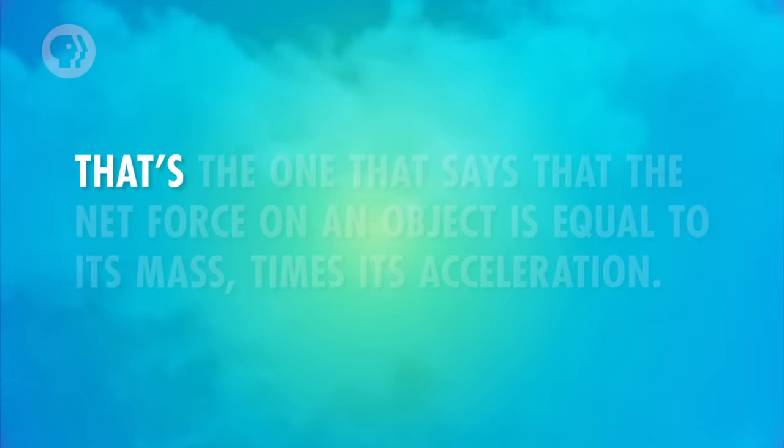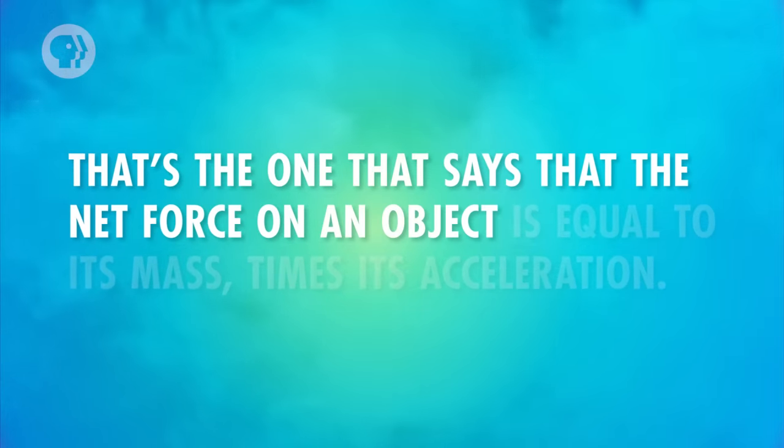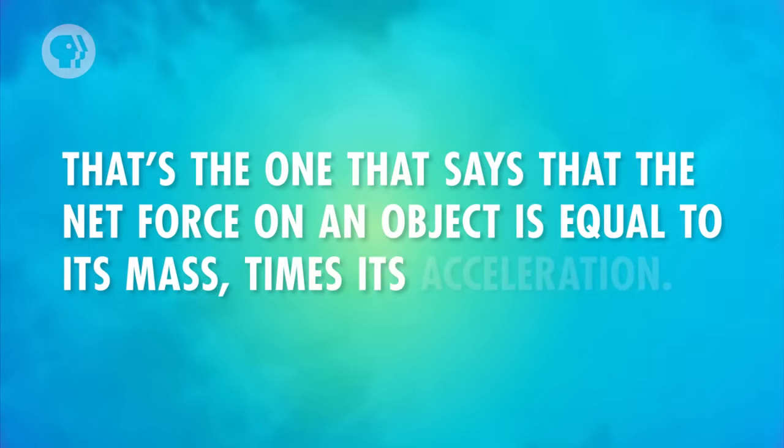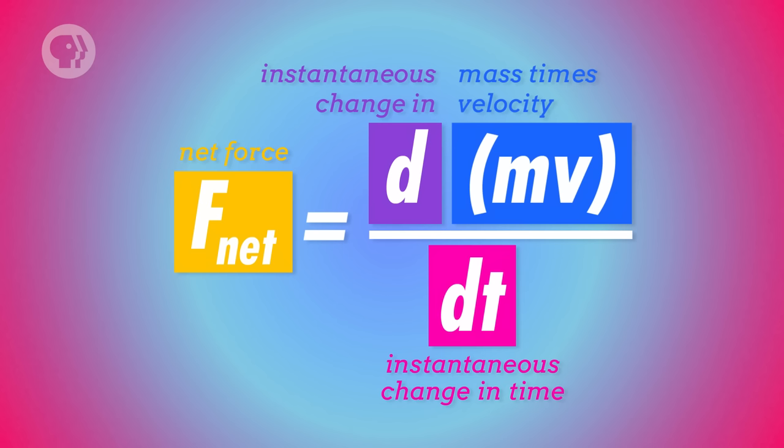Remember Newton's second law? That's the one that says that the net force on an object is equal to its mass times its acceleration. Except that's not actually what Newton said. He really said that an object's so-called quantity of motion was equal to its mass times its velocity. And the net force is equal to the change in that mass times velocity over time. In other words, it's the derivative of mass times velocity with respect to time.